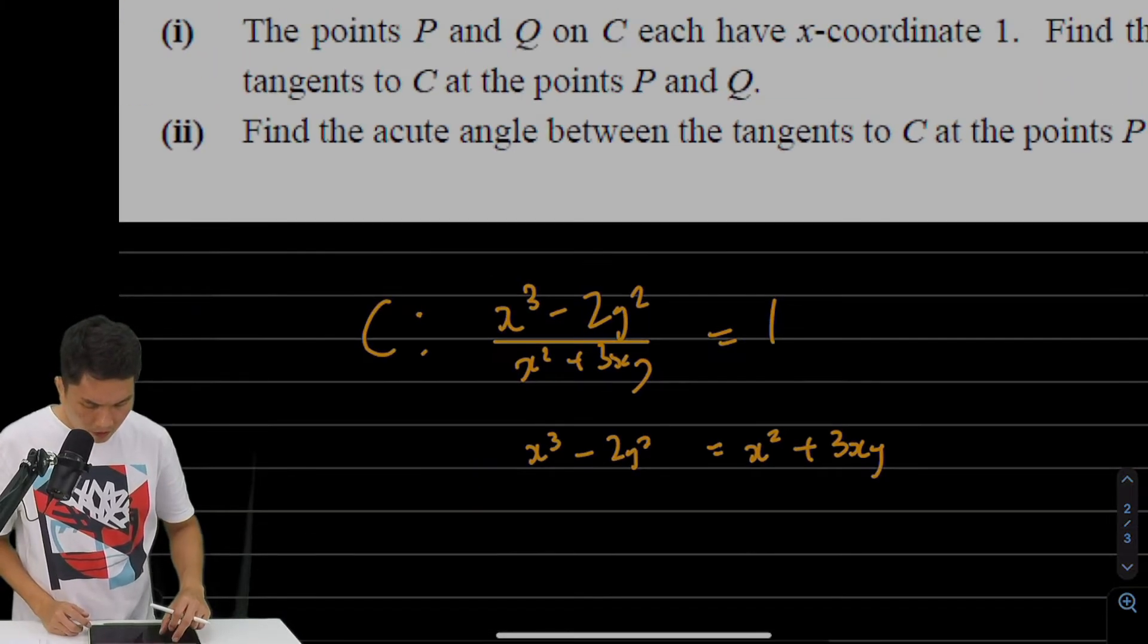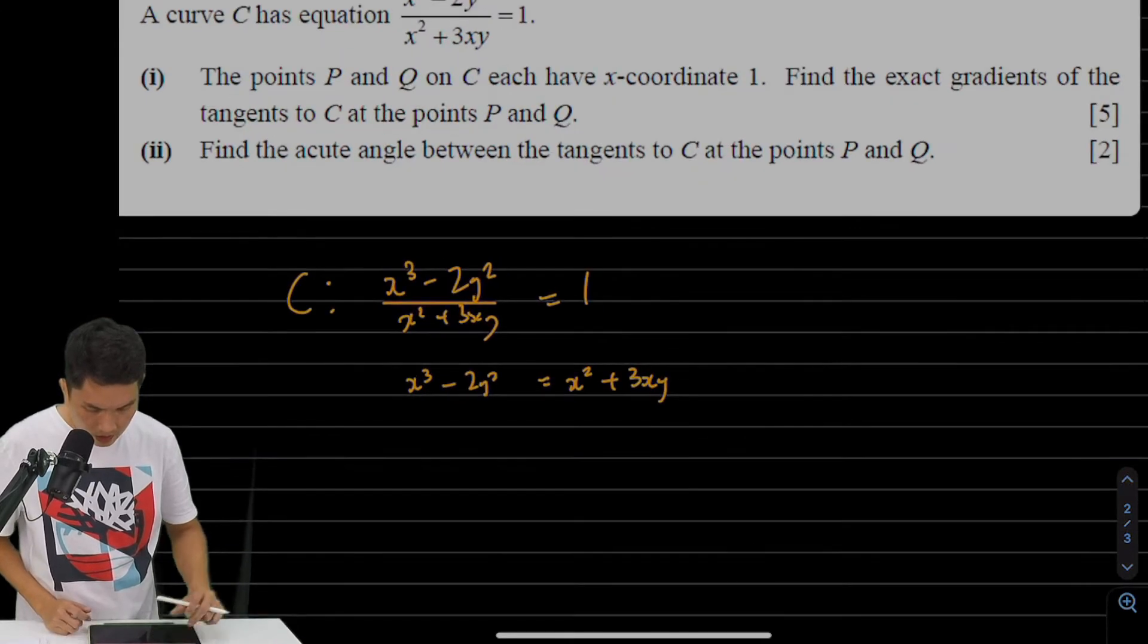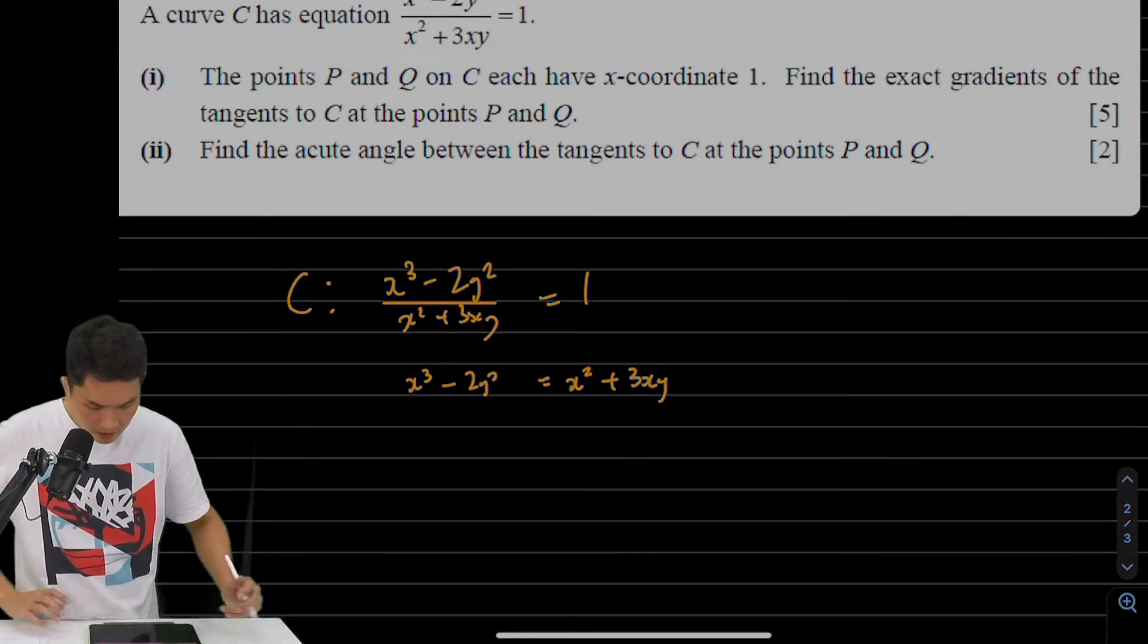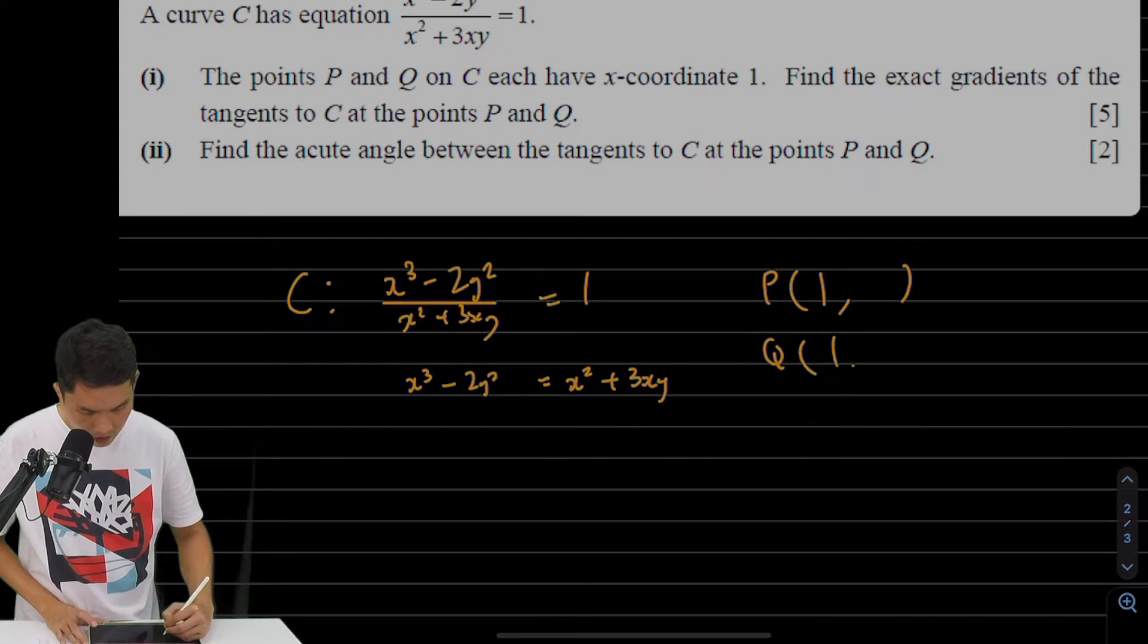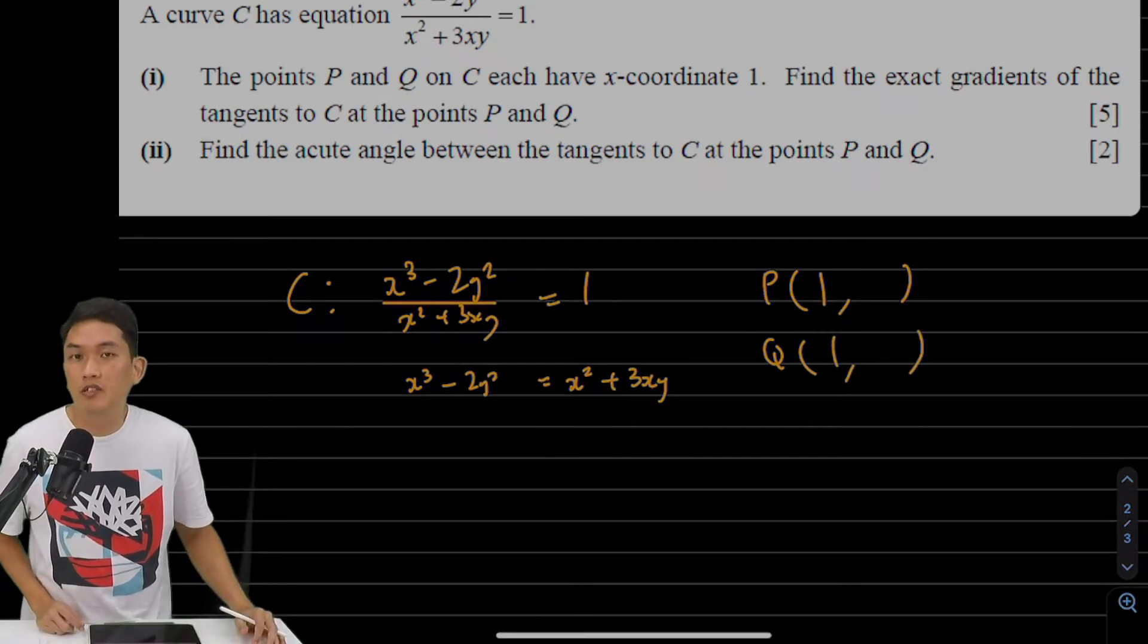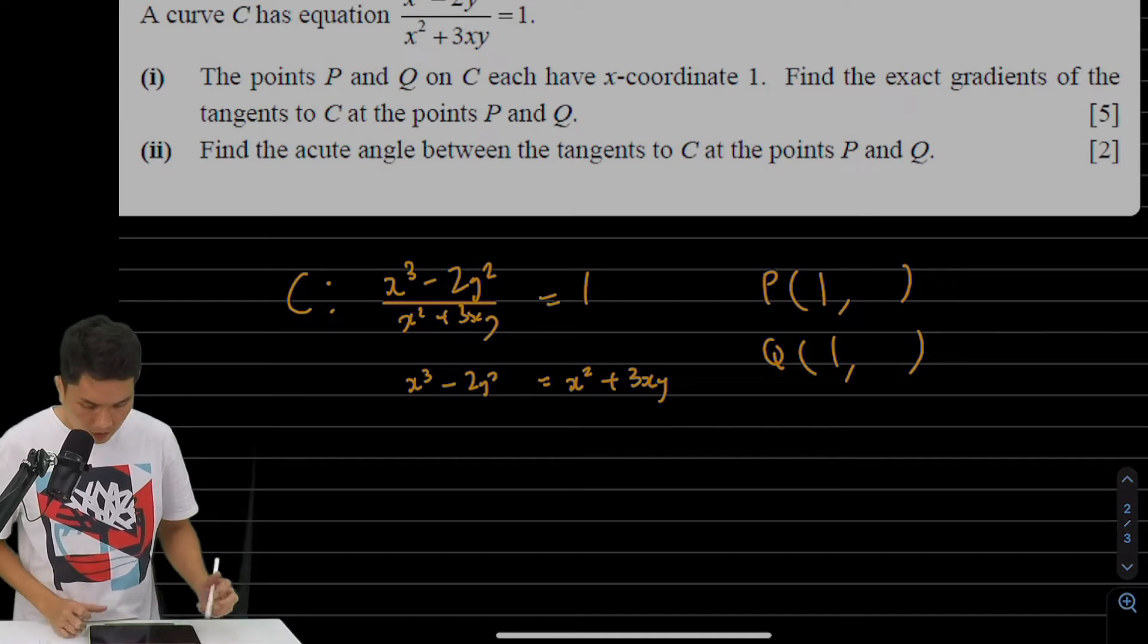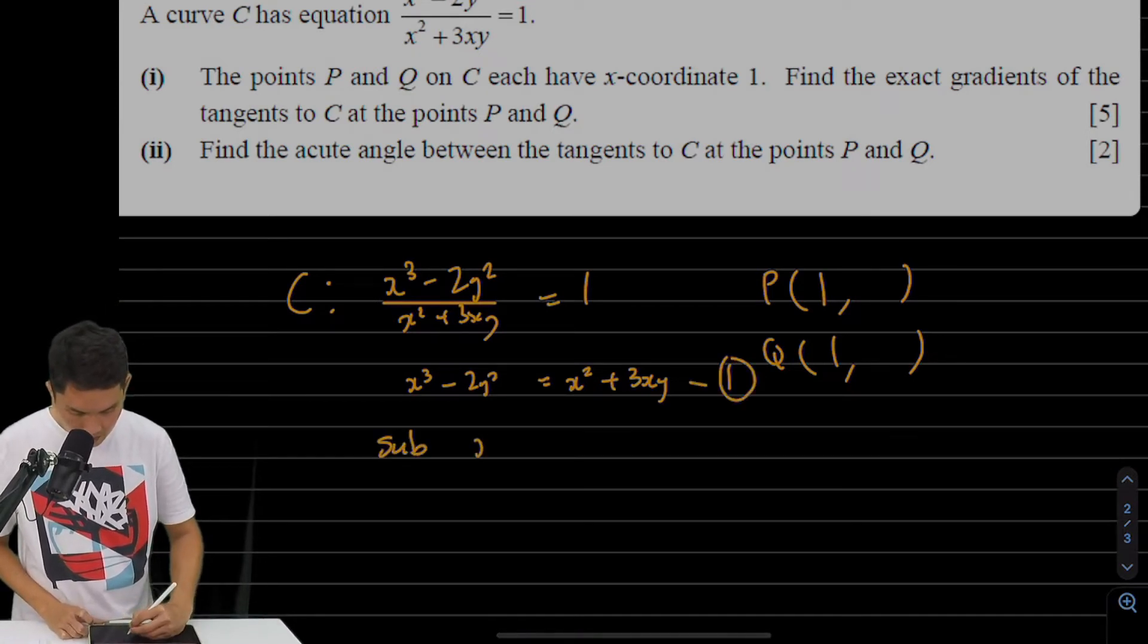But before that, to find the exact gradients of the tangents, I need the exact coordinates. Right now, I only know that for points P and Q, the x-coordinate is 1. I need the y-coordinates. So I'm going to substitute x equals 1 into this equation. Let's call this equation number 1.